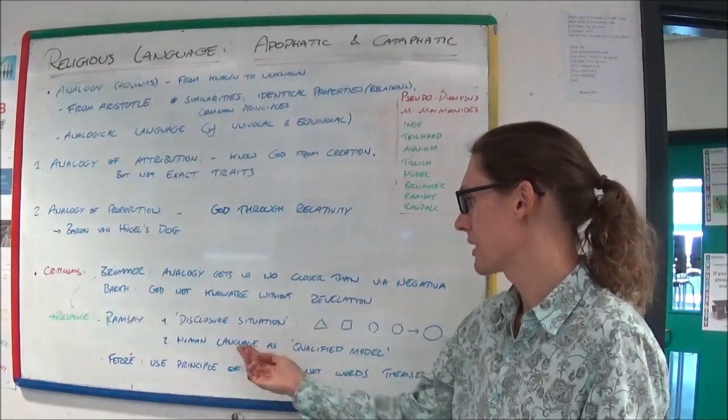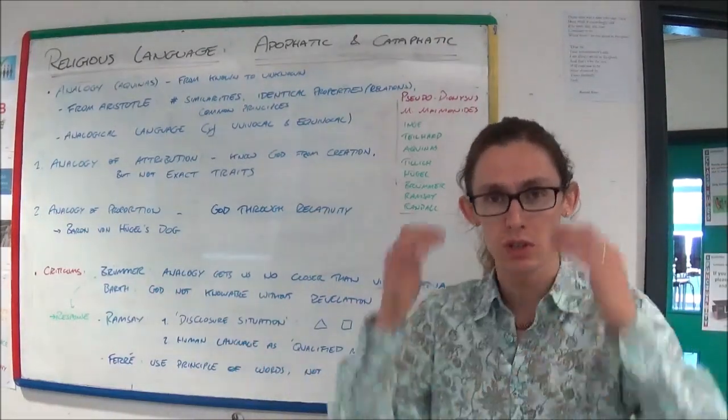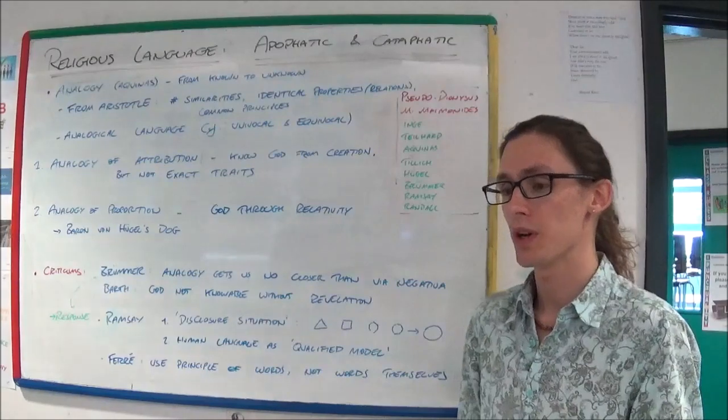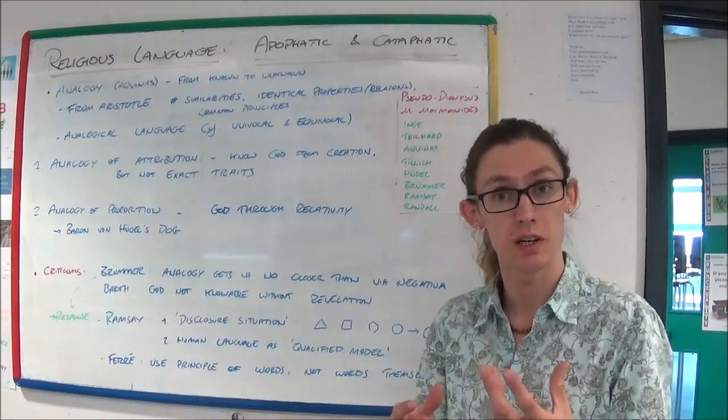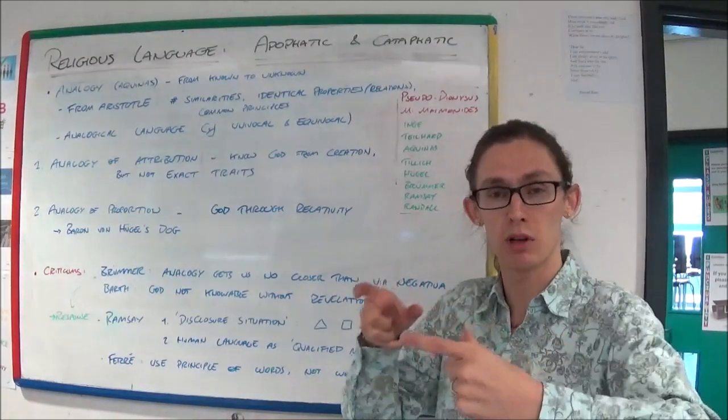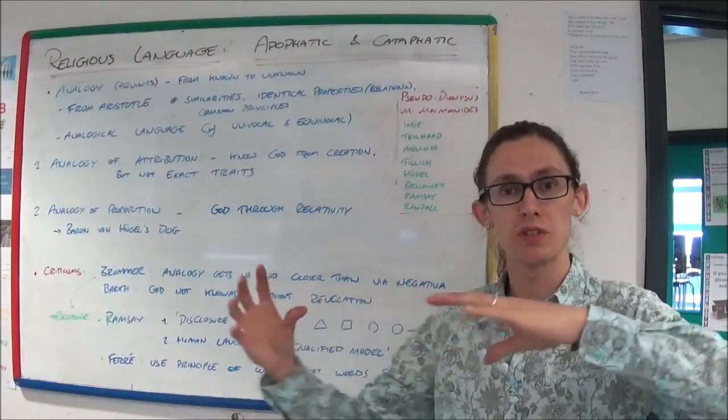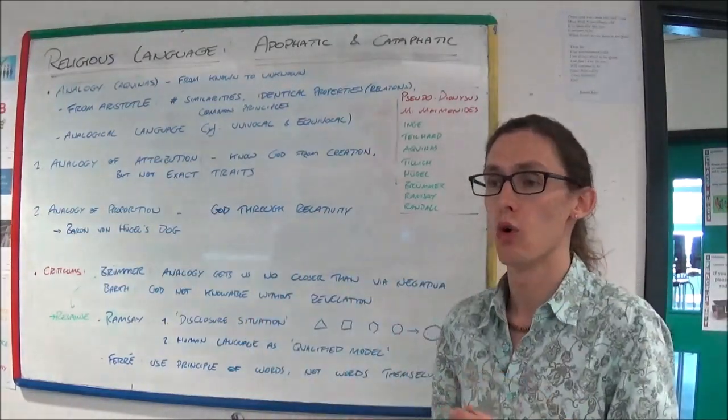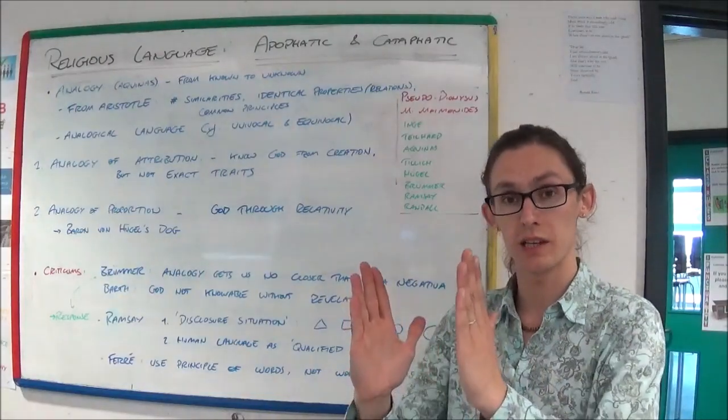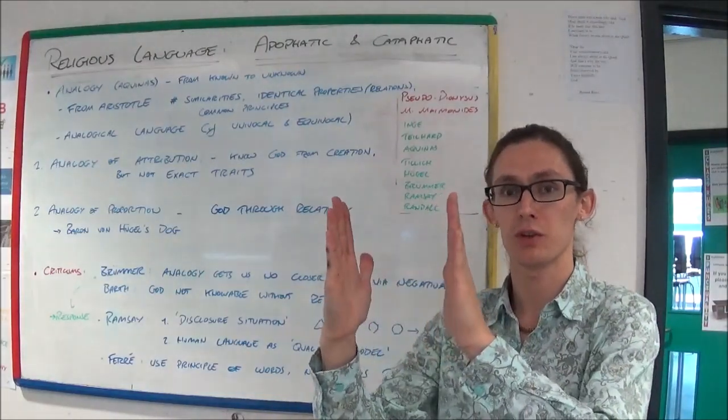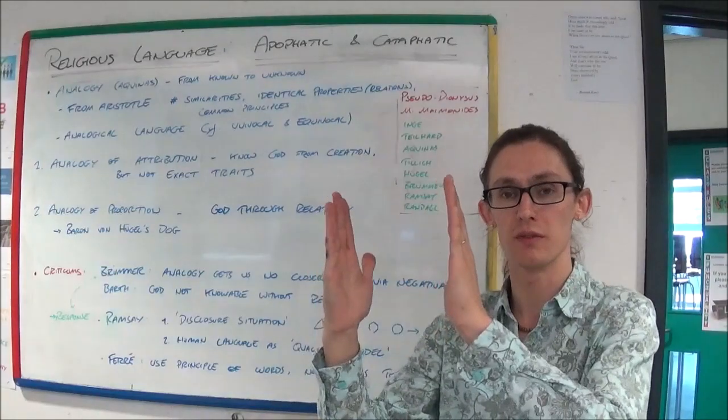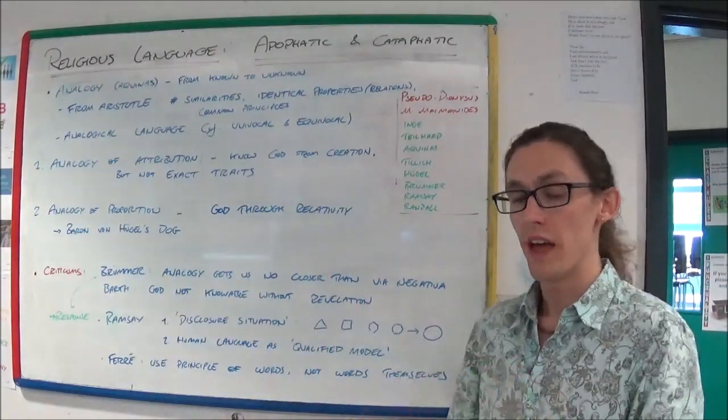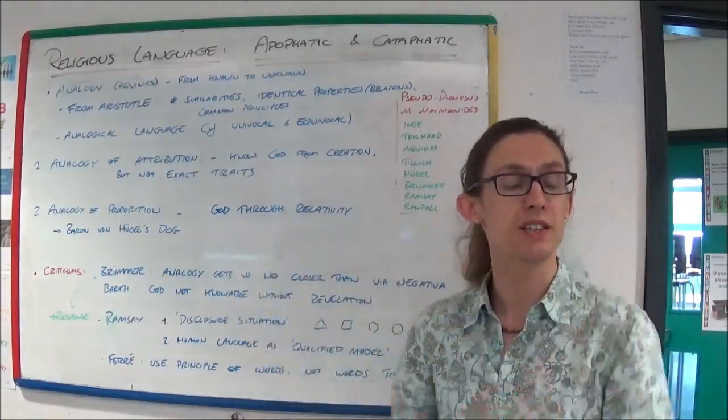And they also suggest that human language is a qualified model. So what do we mean by that? Well, we could make, say, if we're testing an airplane, we could make a little model, put it in the wind tunnel to see whether the wind moved over it correctly, or we might make a model building and put it on an earthquake simulator to see whether it would survive. And then that would tell us the real thing is going to be alright.